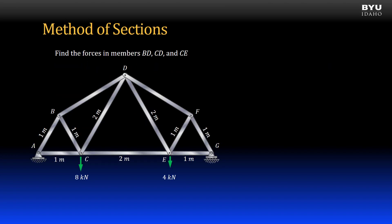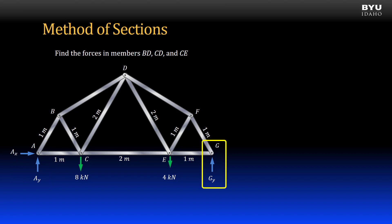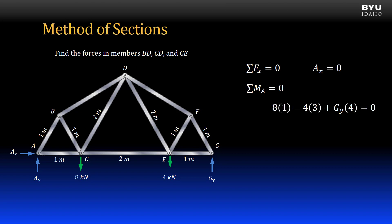Here is our truss, and here is a free body diagram. I replace the pin support with an x and a y direction reaction force, and the roller support with a y direction reaction force. Summing forces in the x direction, I find AX is 0. Summing moments about point A, I get that reaction GY is 5 kN. And summing forces in the y direction, I find that AY is 7 kN.